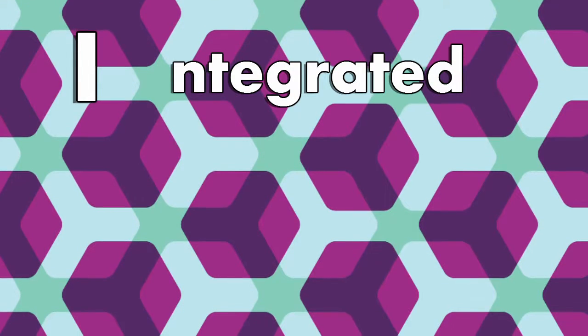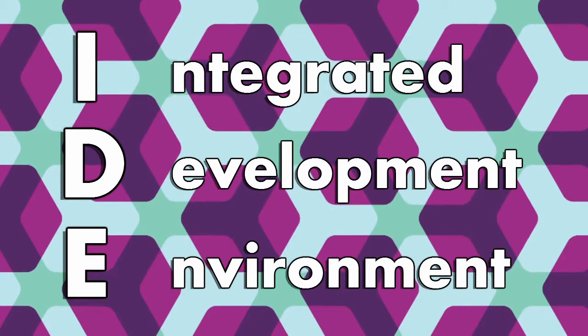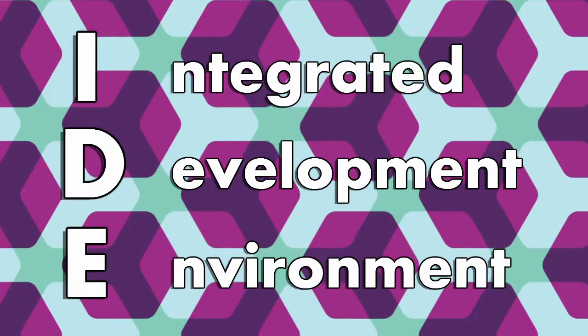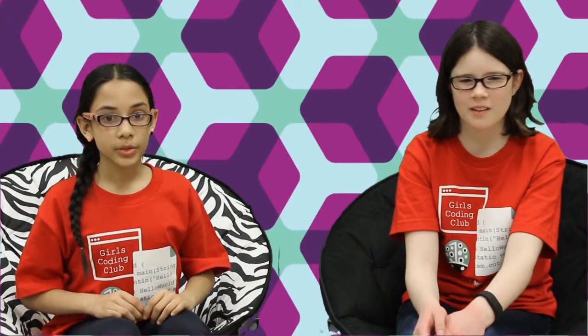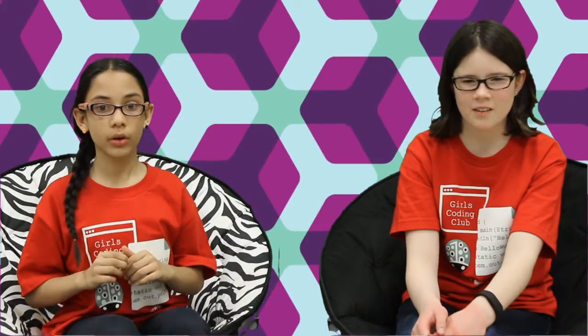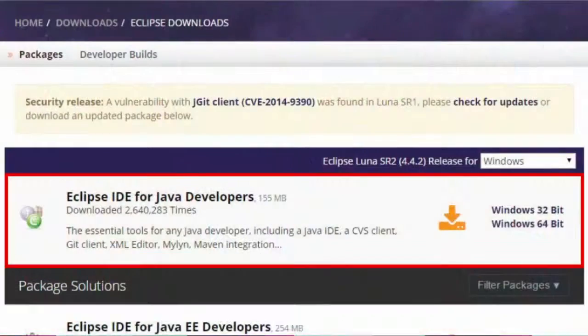Eclipse is an integrated development environment, or IDE. This means it's meant to help programmers create new software. Start by going to Eclipse.org. Click the download button, and you'll be taken to all the different versions of Eclipse. You'll want the one right at the top, called Eclipse IDE for Java Developers.